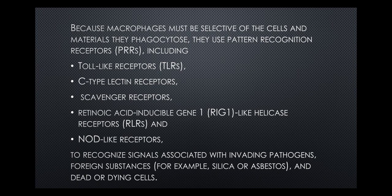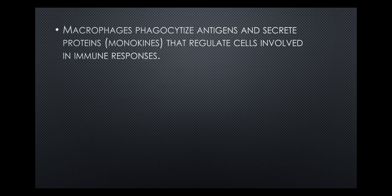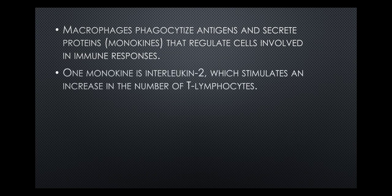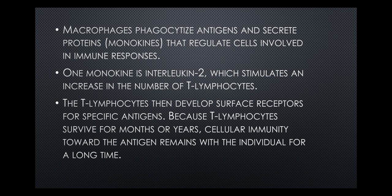They recognize the invading pathogens, catch them, engulf them and kill them. Macrophages phagocytose antigens and secrete proteins that regulate cells involved in immune responses. One monokine is interleukin-2, which stimulates an increase in the number of T cells. The T lymphocytes then develop surface receptors for specific antigens. Because T lymphocytes survive for months or years, cellular immunity towards the antigen remains with the individual for a very long time.